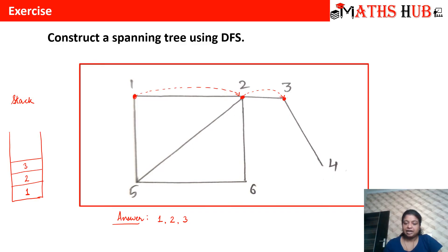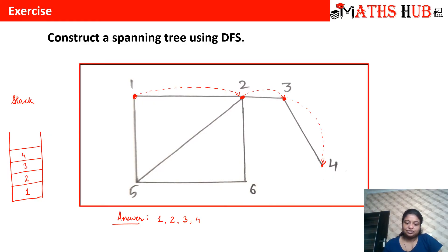From vertex three, you can see that only vertex four is the adjacent vertex. So let us move to vertex four and put vertex four in our answer and in the stack as well. After reaching vertex four, you can see that there is no new adjacent vertex left.